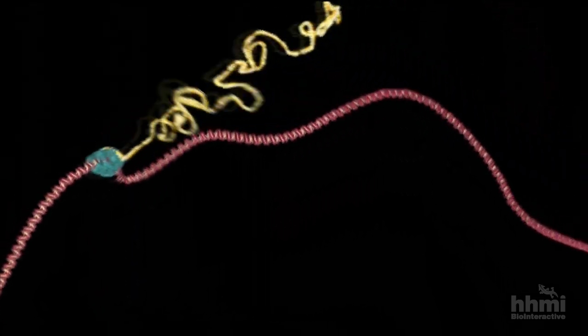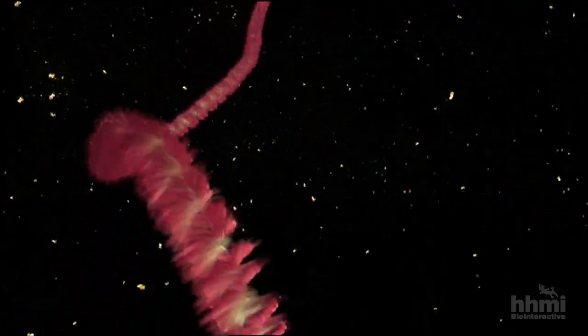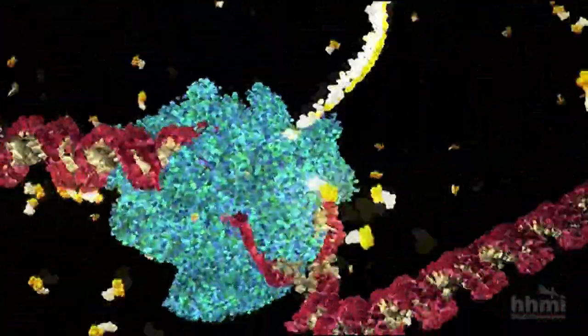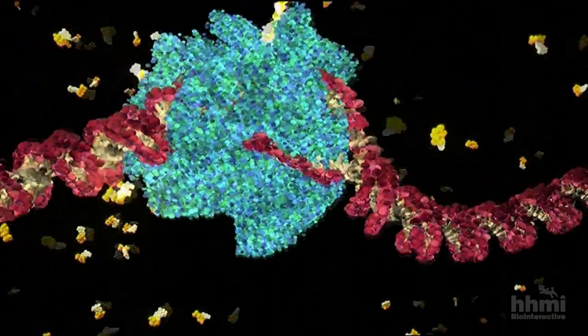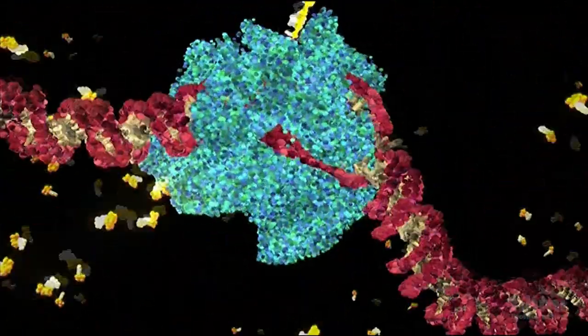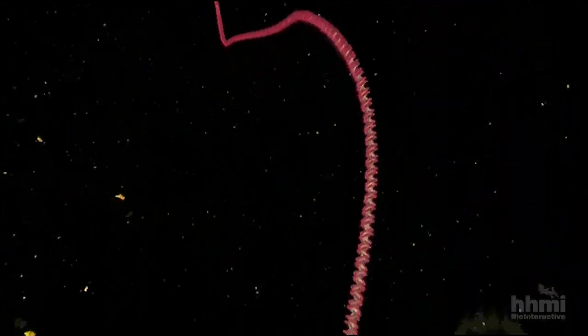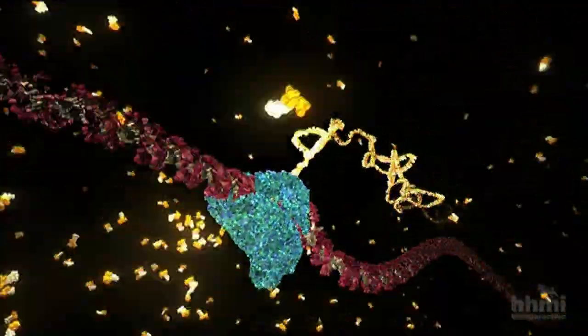Contact between the activator proteins and the initiation complex releases the copying mechanism. The RNA polymerase unzips a small portion of the DNA helix, exposing the bases on each strand. Only one of the strands is copied. It acts as a template for the synthesis of an RNA molecule which is assembled one subunit at a time by matching the DNA letter code on the template strand.